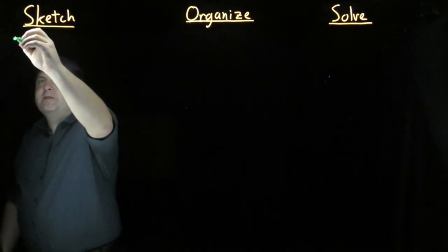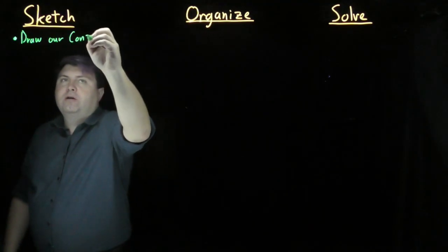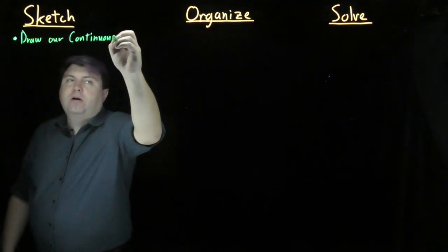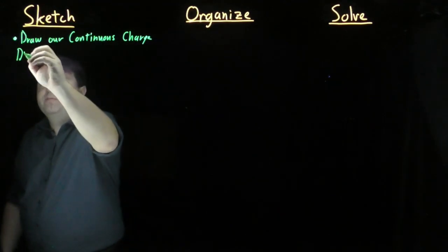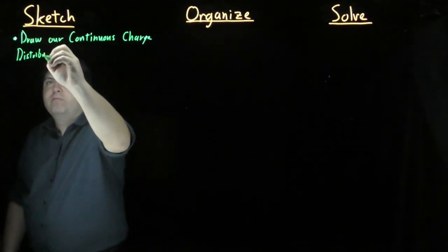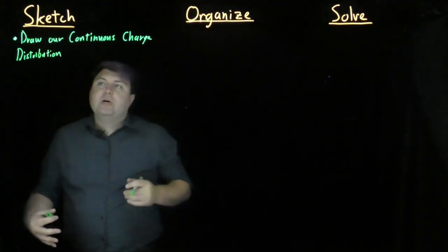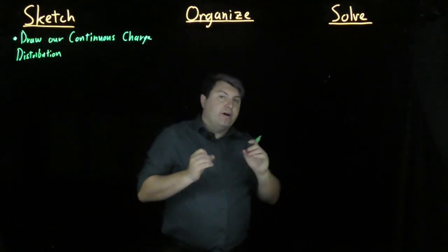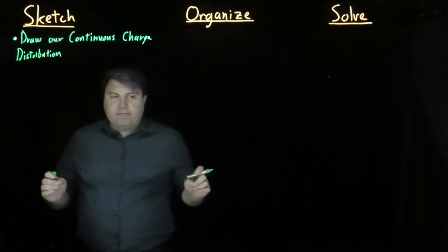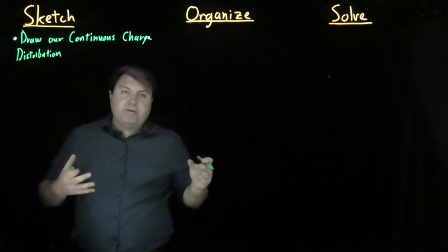In our sketch system, we want to draw our continuous charge distribution as simply as possible. This means that if it's a line or an arc, we want to reduce it to as many dimensions as possible, probably one-dimensional if possible, two-dimensional if not.